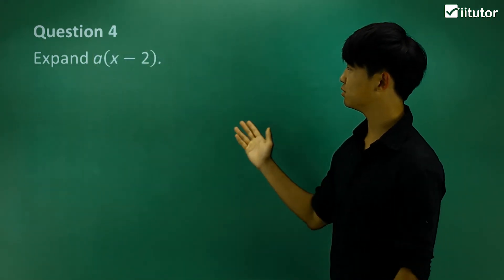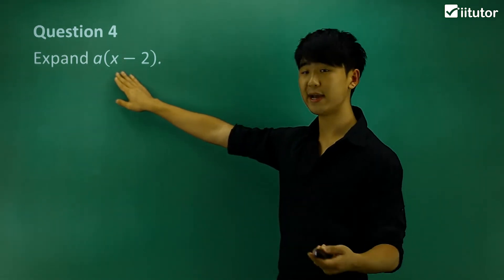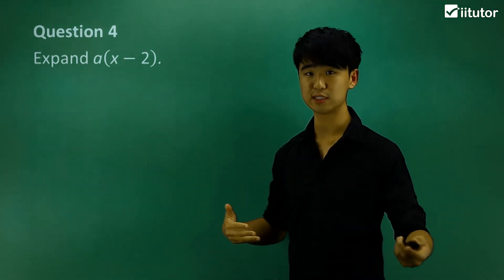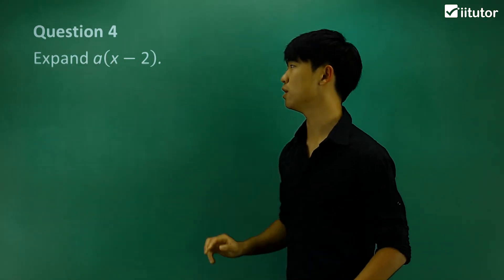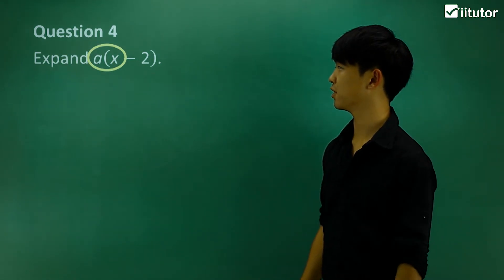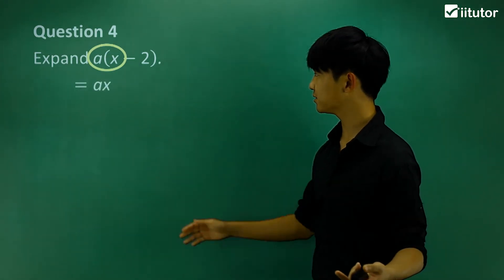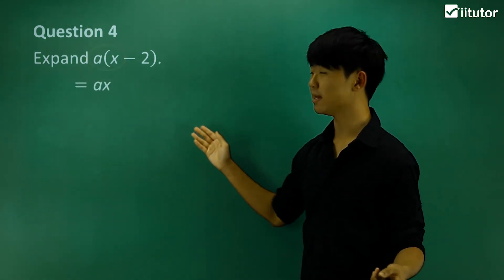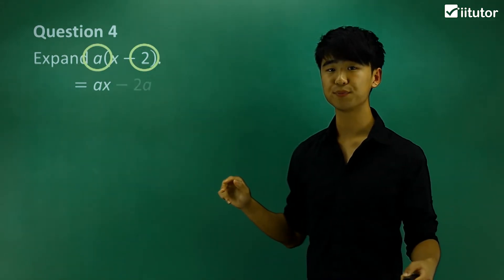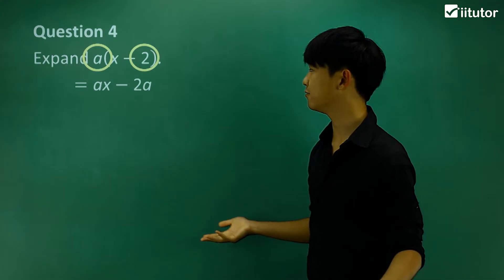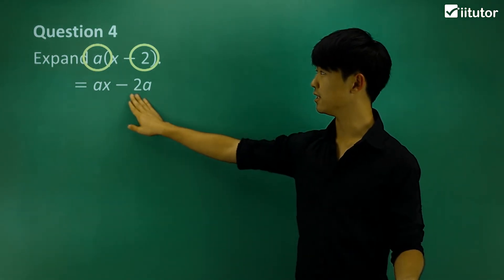In question 4, we expand a(x−2). Hopefully basic expansion is becoming more familiar. We multiply the first two terms: a multiplied by x gives ax. Then for the second term, think of it as a multiplied by negative 2, which gives −2a. So the expanded form is ax − 2a. Sign is very important.